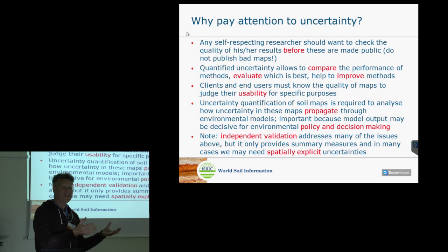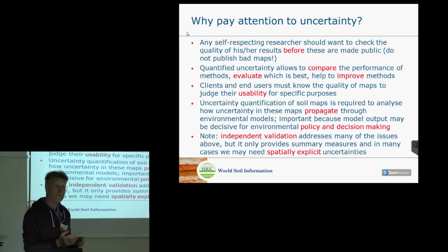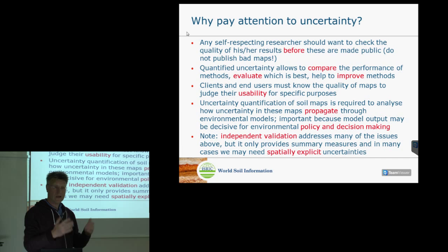There was a question on Monday about comparing the kriging standard deviation map with validation statistics. If we have independent validation data, we can compute the mean error or root mean squared error by comparing predicted and measured soil properties. However, that summary statistic is not spatially explicit. If we want spatially explicit uncertainties — how accurate the map is at each location — we need to use kriging techniques, which also quantify the local uncertainty in the map.